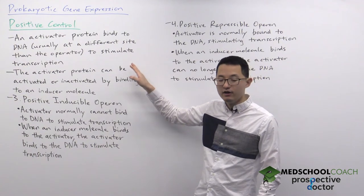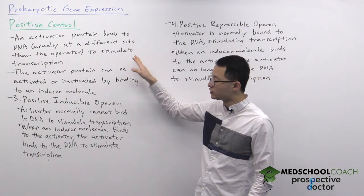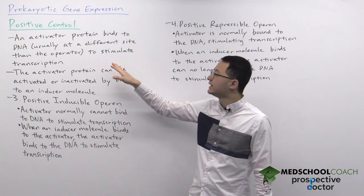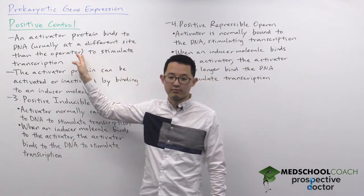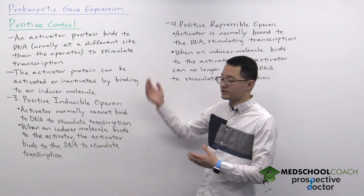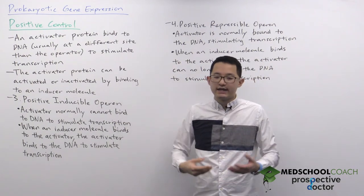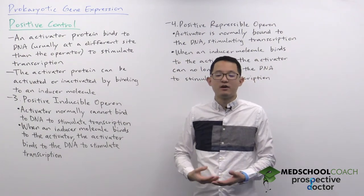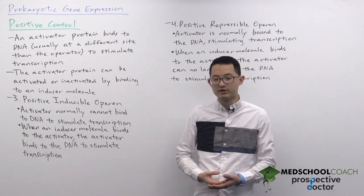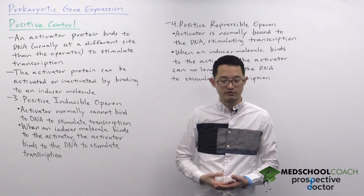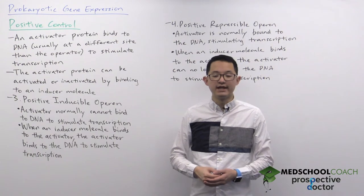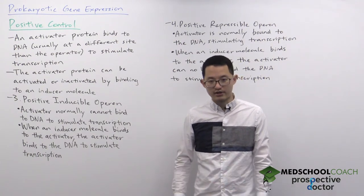The activator protein usually binds at a site on the DNA that is separate from the operators. Based on this description, the activator protein is essentially the opposite of a repressor protein. When a repressor protein binds to DNA it prevents transcription, whereas when an activator protein binds to DNA it stimulates transcription.